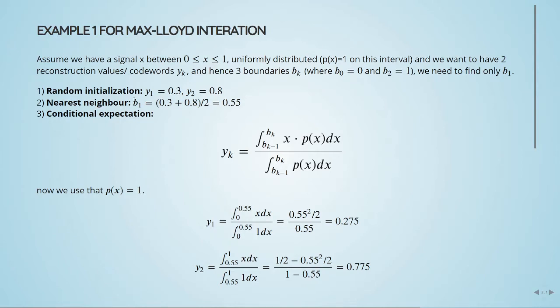So then we have b1, we have this value here. Then we compute the conditional expectation. We have this equation here for y of k. So now we have b1, and we will use our pdf, which is equal to 1. So what we will do, we have from 0 to 0.55, so b0 to b1. And we have this part here. Then we also have the denominator here. We are just replacing here.